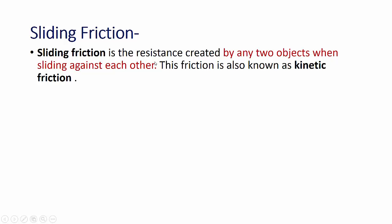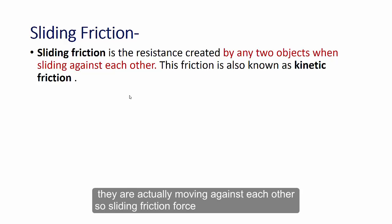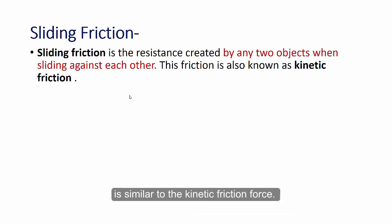Sliding friction force is the resistance created by any two objects when sliding against each other. This friction is also known as kinetic friction. So when two objects are sliding against each other they are actually moving against each other. So sliding friction force is similar to the kinetic friction force.